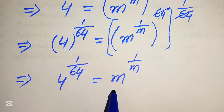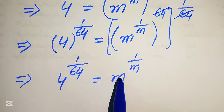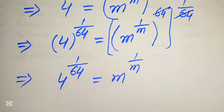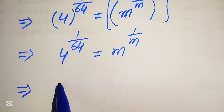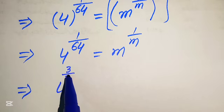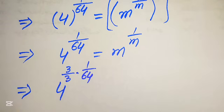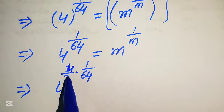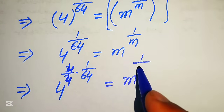On the right hand side the exponent is the reciprocal of the base m, so we need to make the same condition true on the left hand side. We multiply and divide the exponent 1 over 64 by 4, giving us 4 to the power of 4 times 1 over 4 times 64, equals m to the power of 1 over m.